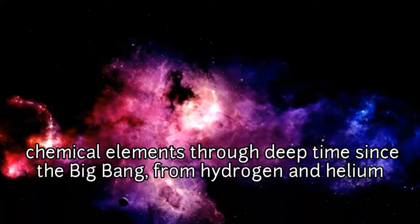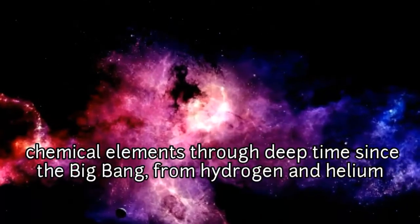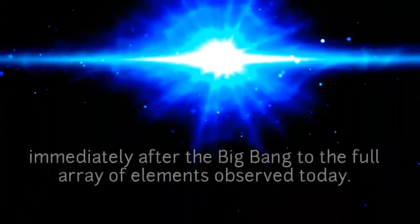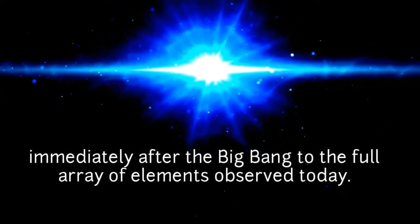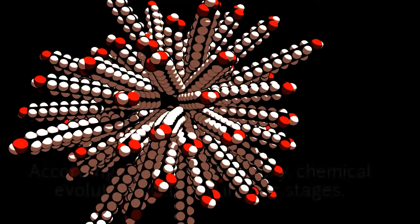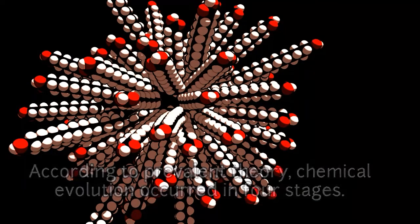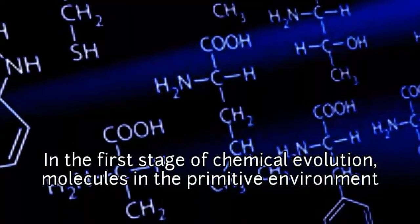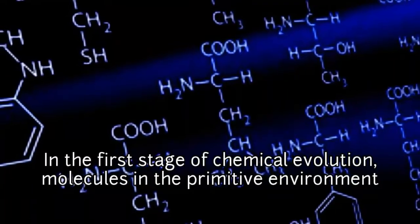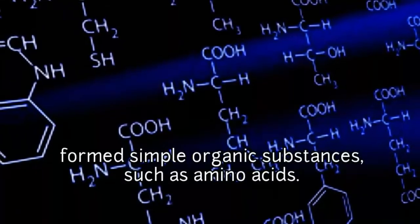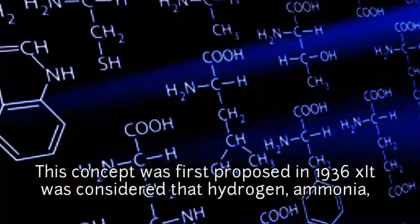Elements through deep time since the Big Bang, from hydrogen and helium immediately after the Big Bang to the full array of elements observed today. According to the prevalent theory, chemical evolution occurred in four stages.